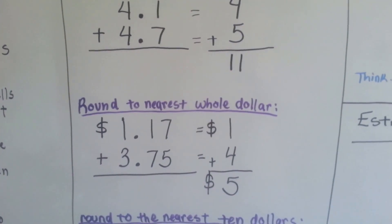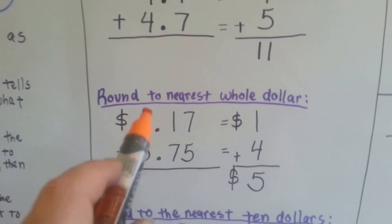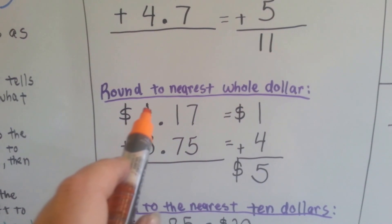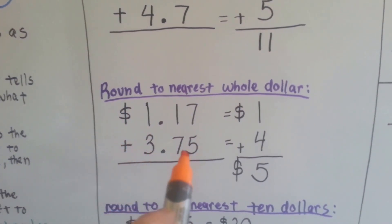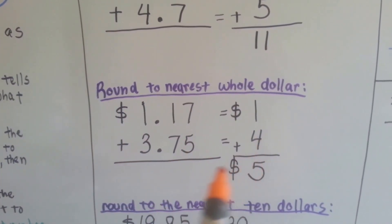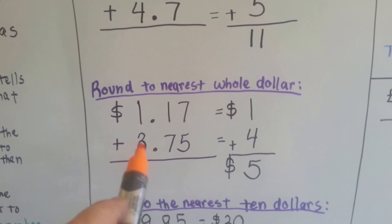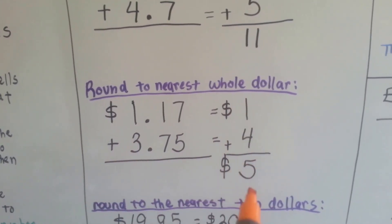We can round to the nearest whole dollar. $1.17 would round to $1 because the 1 tells the 1 to stay the same. $3.75 would go up to $4 because the 7 tells the 3 to go up to the next number. Then we have $5.